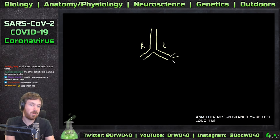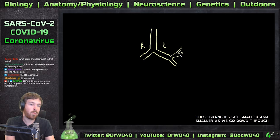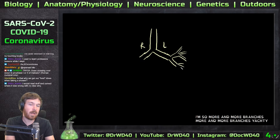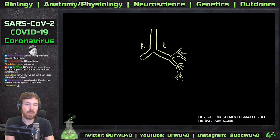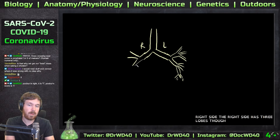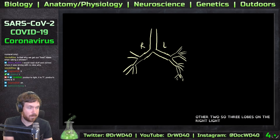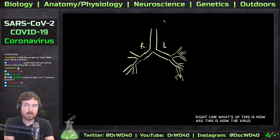The left lung has two lobes. These branches get smaller and smaller as we go down - more and more branches. They get much much smaller at the bottom, same over here on the right side. The right side has three lobes. So this is how air - this is how the virus - let's make the virus that lime green color.